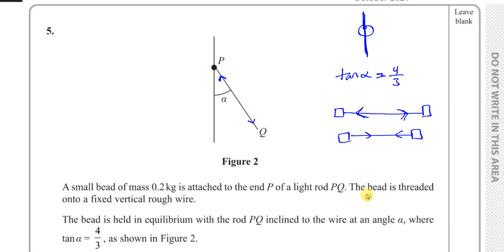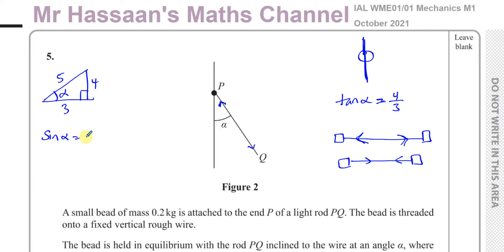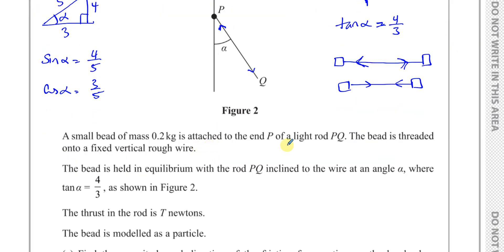First, let's deal with tan α = 4/3. I'll draw a right-angled triangle with angle α, where opposite = 4 and adjacent = 3. By Pythagoras, the hypotenuse is 5 — it's a 3-4-5 triangle. So sin α = 4/5 (opposite over hypotenuse) and cos α = 3/5 (adjacent over hypotenuse). These exact values are what we'll need in our calculations.